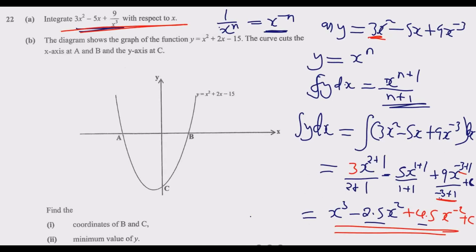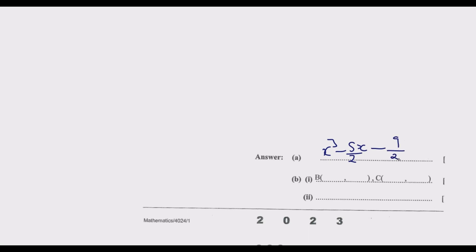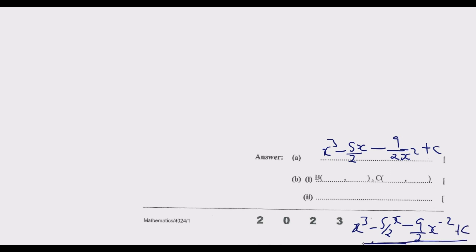You can write 2.5 as a decimal or express it as a fraction to make it look better. So the answer can be written as x³ − 5x/2 − 9/(2x²) + C, or equivalently x³ − (5/2)x − (9/2)x⁻² + C. Writing 9/2 instead of 4.5 and 5/2 instead of 2.5 is acceptable — both decimal and fraction forms are correct.